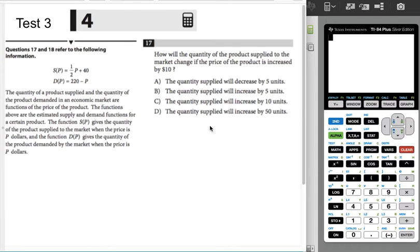So how will the quantity of a product supplied, so we're looking at S of P, to a market change if the price is increased by $10? So there's two ways to approach this. Option one is to go with the plug-and-chug method. If this seems too abstract for you, pick a price.